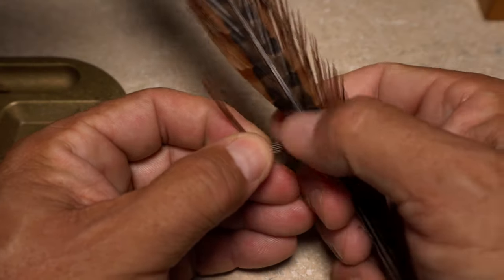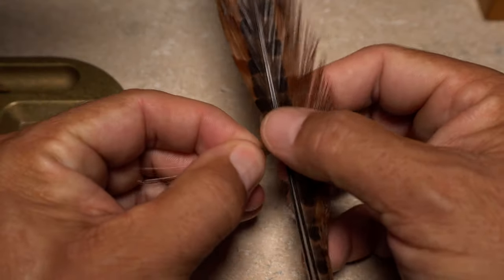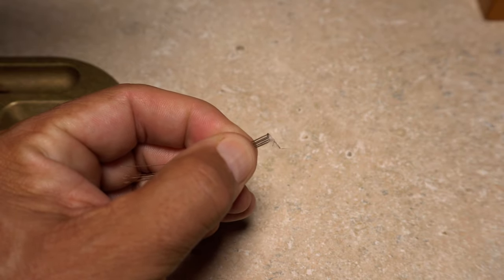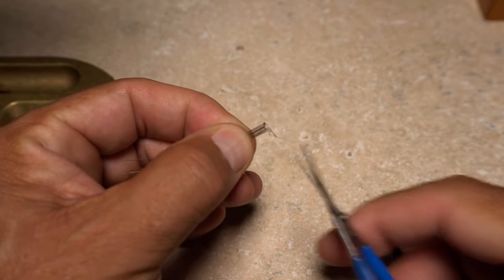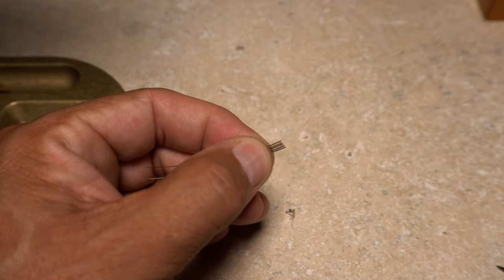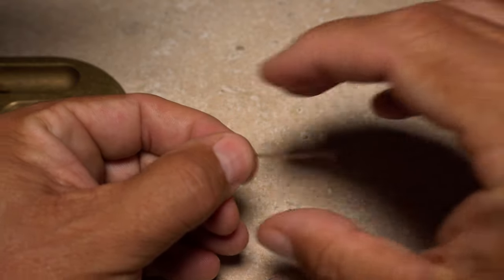Select eight or so natural colored pheasant tail fibers for the extra long tail and strip them free from the stem while keeping their tips aligned. It's a good idea to snip the little curlies off as they tend to grab tying thread.